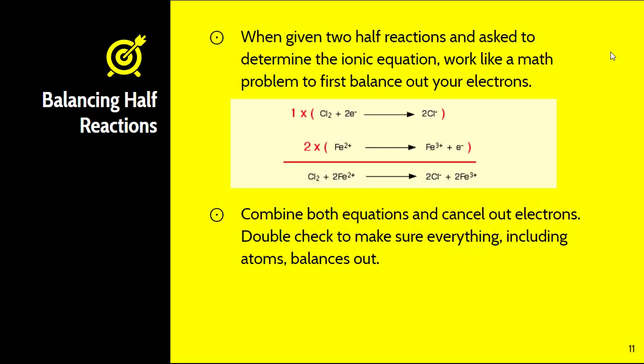Sometimes it's going to ask you to actually determine the entire ionic equation based off of the half reactions. And so you work kind of like a math problem to first balance out your electrons. So in this example here you have two electrons on the left-hand side and one on the right-hand side. Well to balance that out we need to multiply the second part there by two. And then you just kind of cancel out the electrons and combine the equations together. Make sure you double check to make sure everything including your atoms balances out as you go through and complete this. There are some other things that we can do with half reactions and balancing equations but not necessary here. So we're good to go.